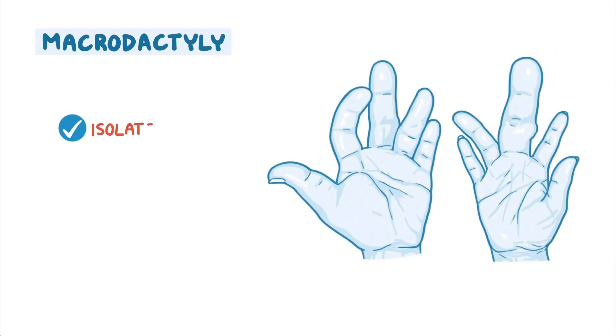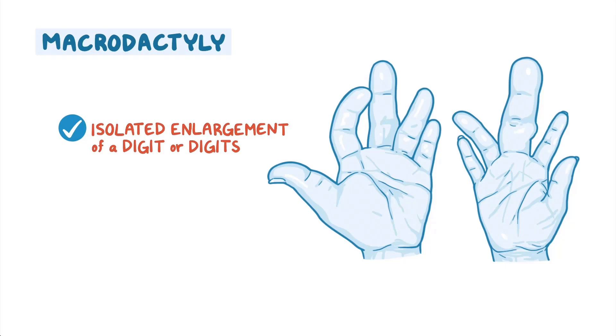Macrodactyly is isolated enlargement of a digit or digits, fingers or toes, due to overgrowth of bone and soft tissue, which can be painful and reduce mobility or dexterity.